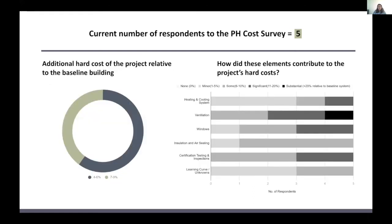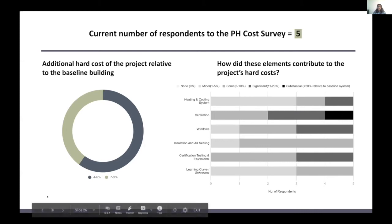Collecting cost data was also essential for the study. The majority of respondents said the additional hard cost of passive house relative to their baseline building was between four and nine percent. The graph shows which elements contribute most to the hard cost — darker colors denote higher hard costs for that element. Based on this, ventilation was one of the more costly elements.